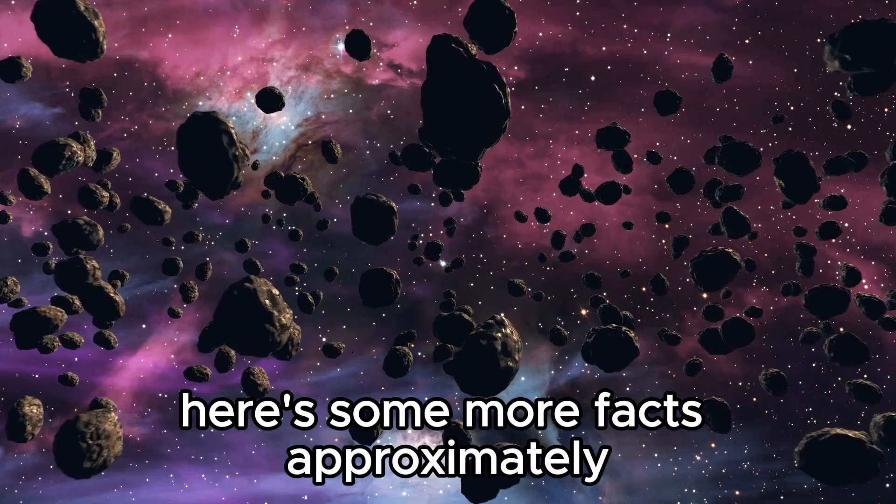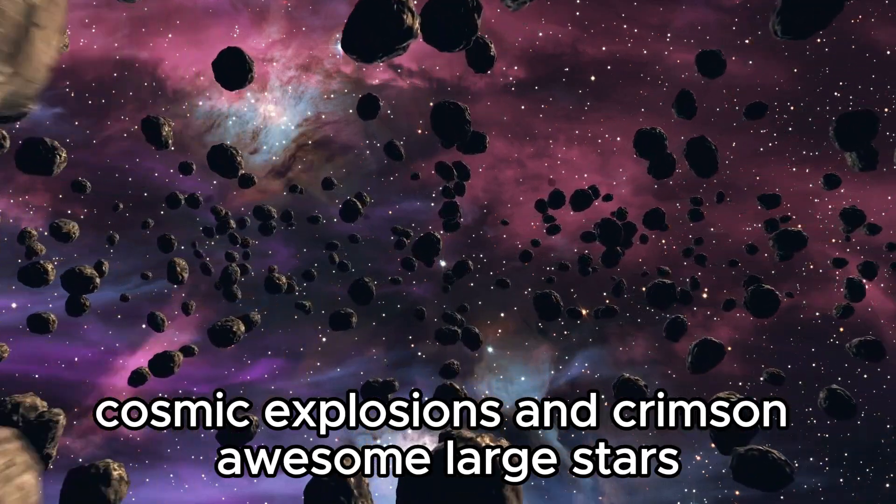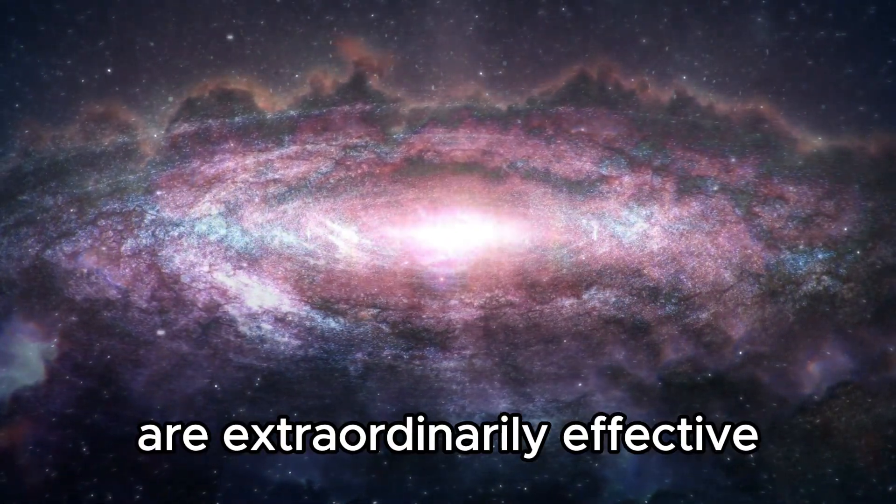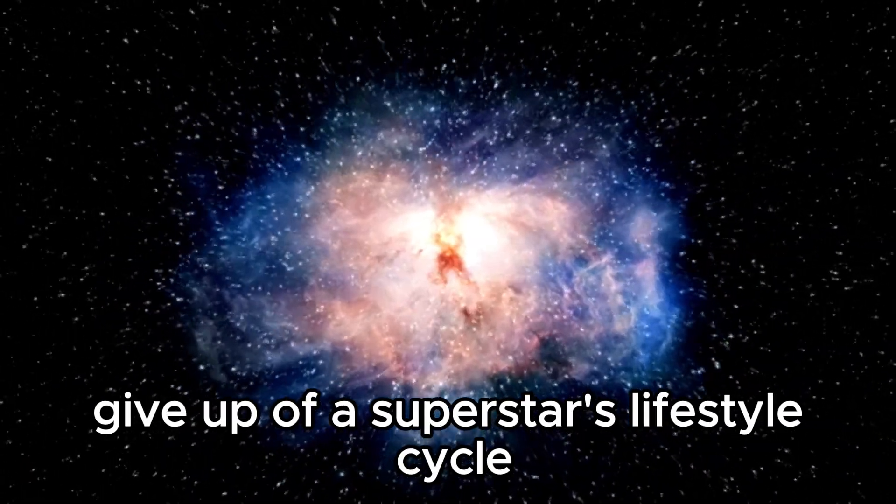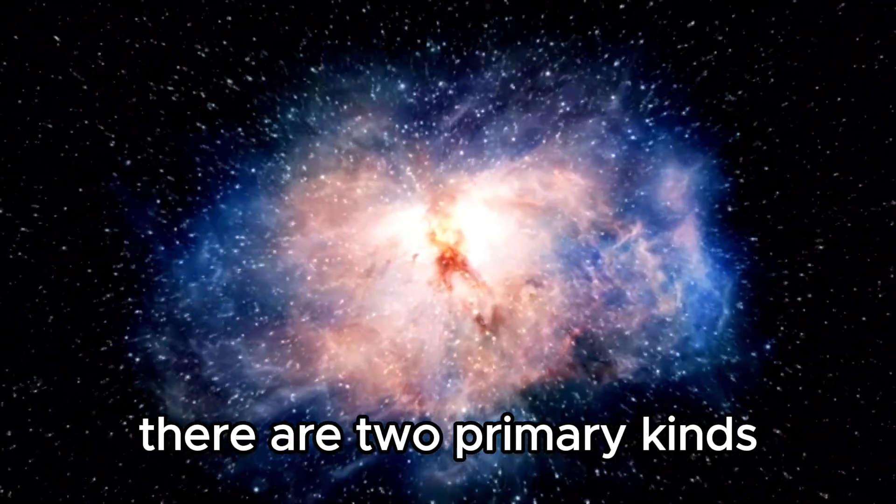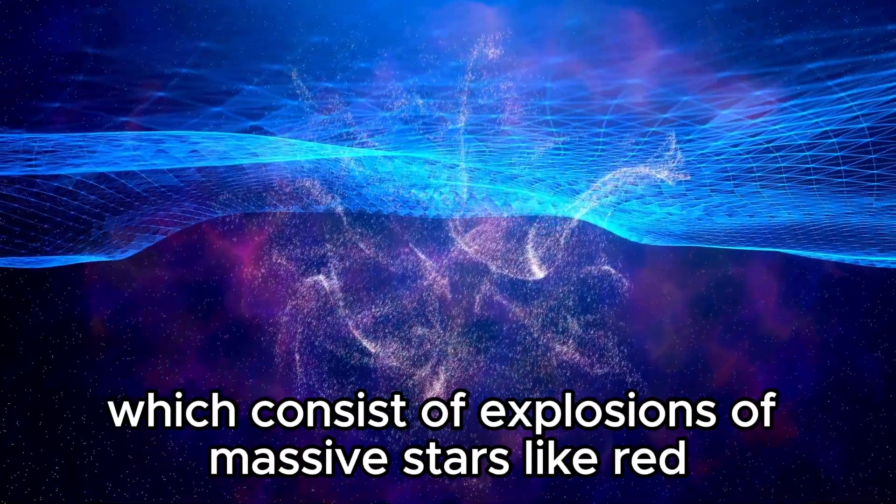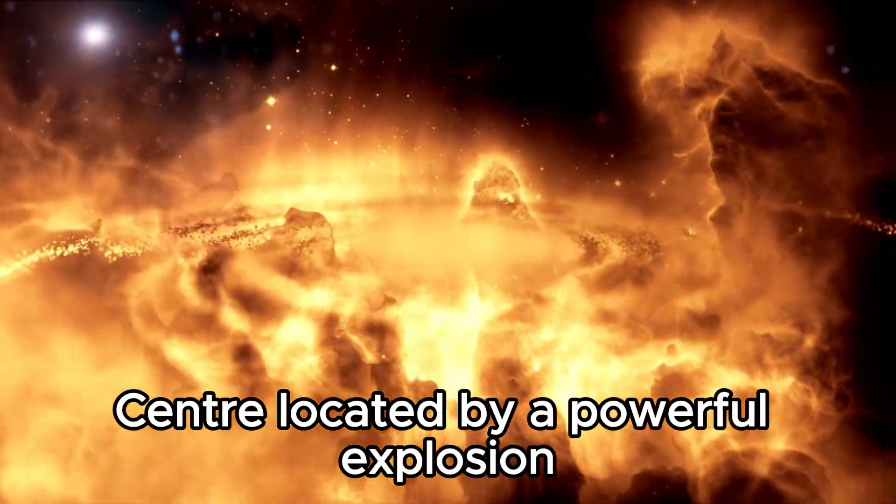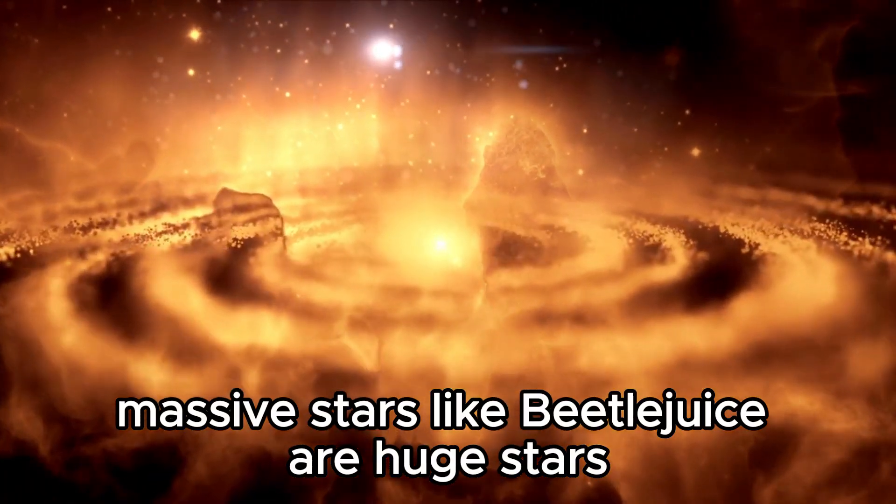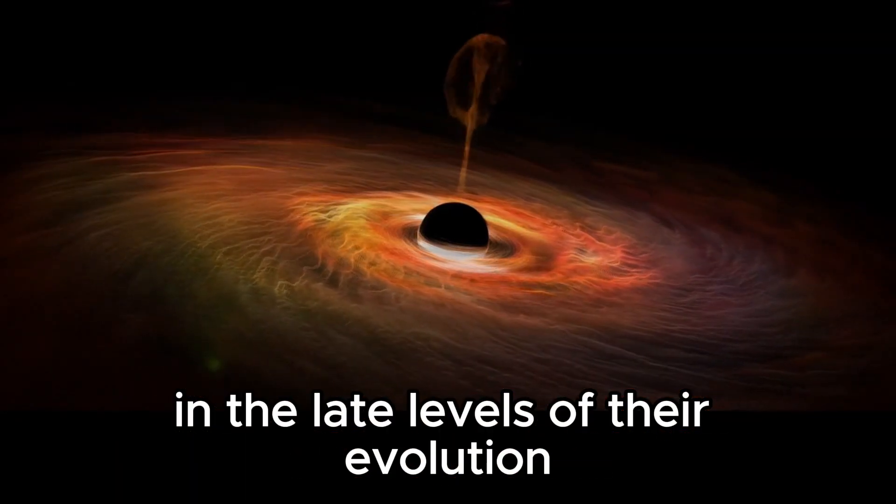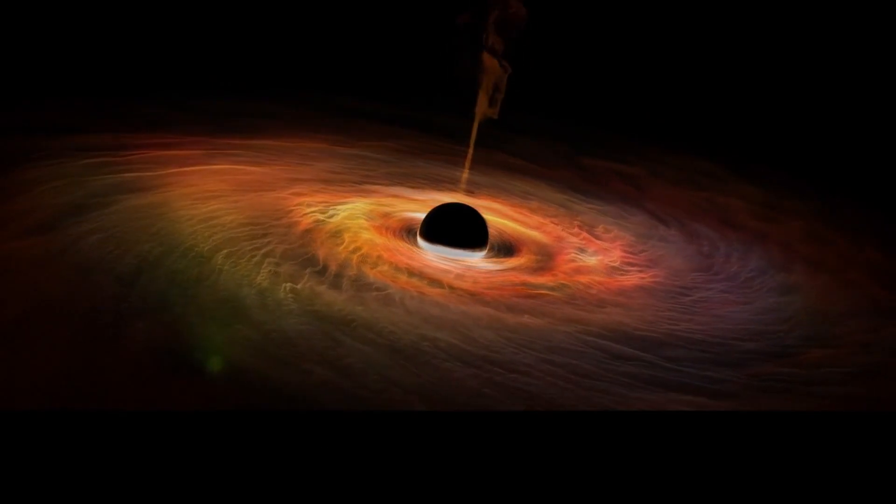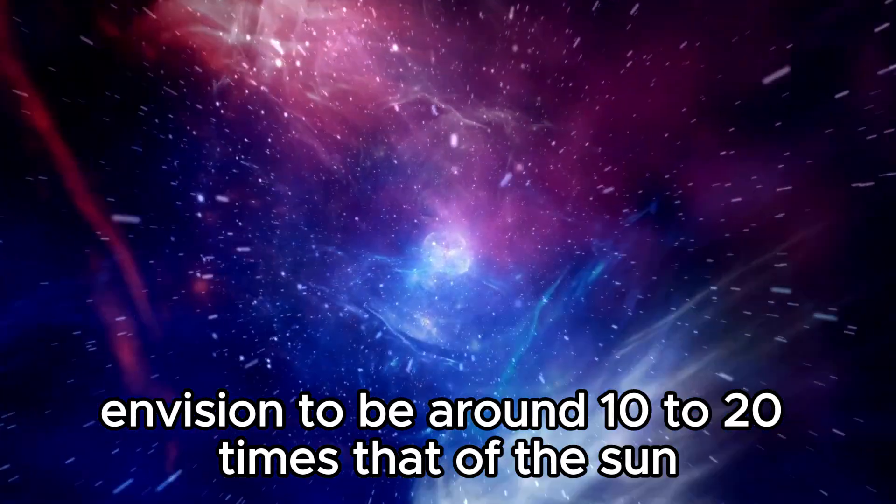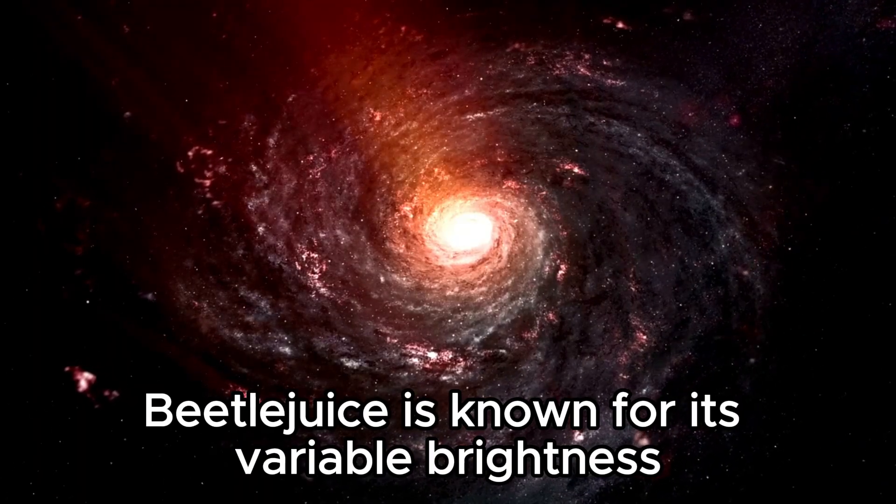Here's some more facts approximately cosmic explosions and crimson awesome large stars, focusing on Betelgeuse as an awesome example. Cosmic explosions, supernovae, are extraordinarily effective explosions that stand up on the give up of a superstar's lifestyle cycle. There are two primary kinds: kind 1 and kind 2. Type 1 supernovae, which consist of explosions of massive stars like red high-quality massive, are characterized through the collapse of the celebrity center, located by a powerful explosion. Red fantastic massive stars like Betelgeuse are huge stars in the late levels of their evolution. They have expanded to sizable widespreads. Betelgeuse is one of the largest red supergiant stars, with a mass envisioned to be around 10 to 20 times that of the Sun.